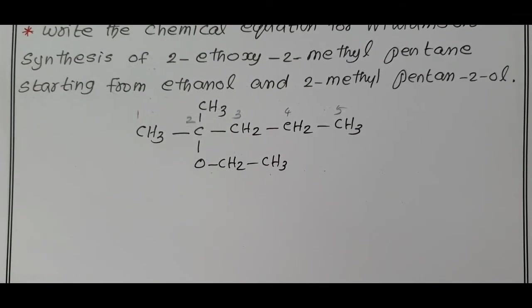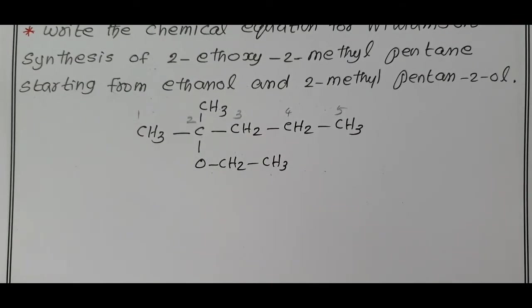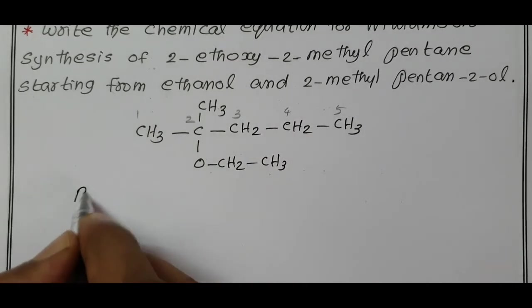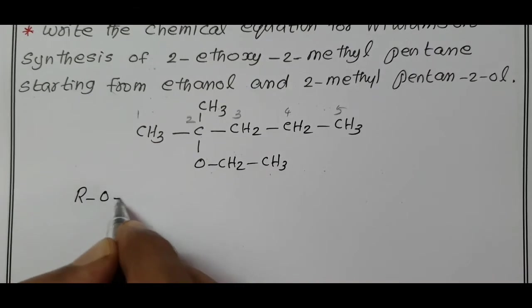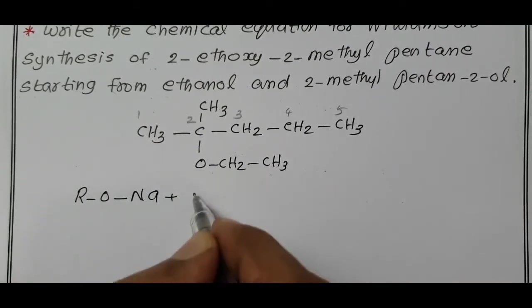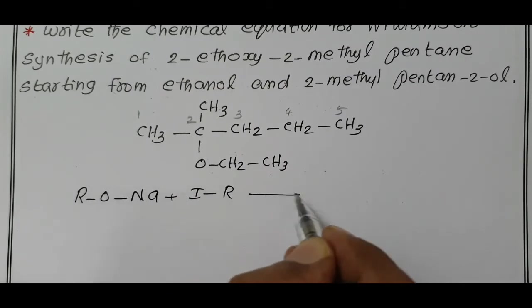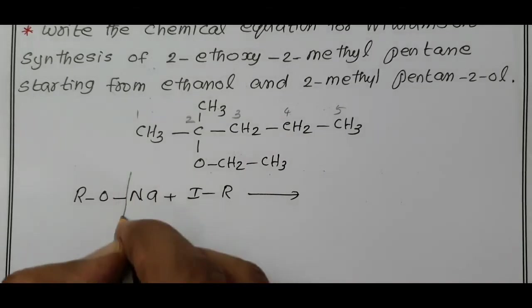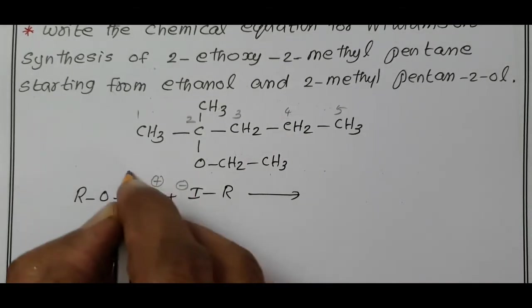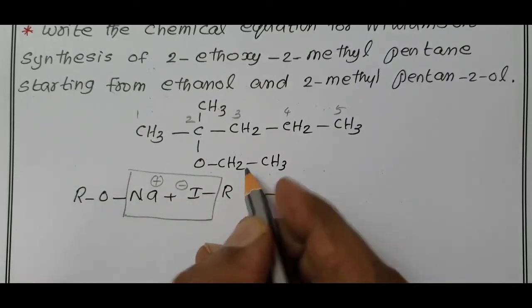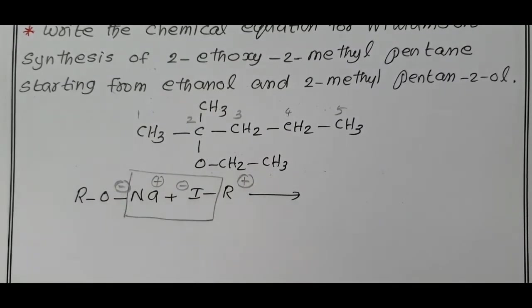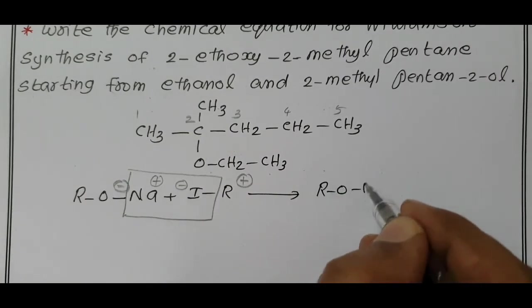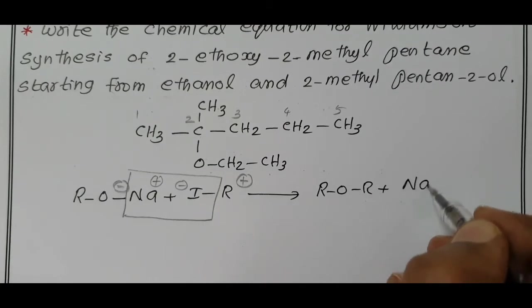And the general molecular formula for Williamson ether synthesis, general reaction, also we know. R-O-Na, sodium alkoxide, when treated with alkyl iodide gives. Na plus I minus, removed as NaI. This plus is added to this minus, gives R-O-R plus sodium iodide NaI.